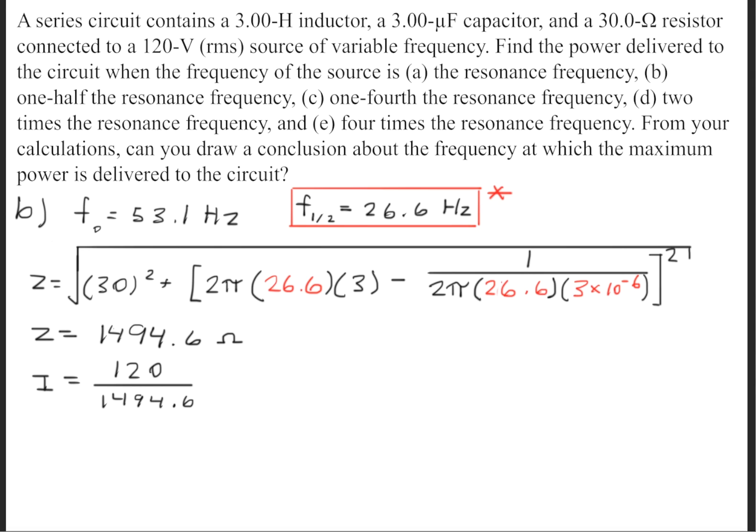Next, we'll need to find the current, and we'll simply take the voltage of 120 volts and divide it by the impedance, which is 1494.6 Ohms. This will give us a current of about 0.08 Amps.